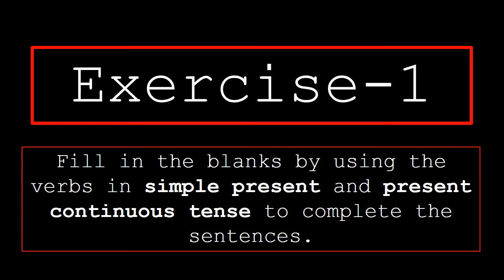Exercise 1. Fill in the blanks by using the verbs in simple present and present continuous tense to complete the sentences. So, children, what you have to do in this exercise — you will read the sentences and then you will focus on the verbs which are given in the brackets and then accordingly you will write the appropriate form of the verb, whether it is required to be written in simple present or present continuous tense.